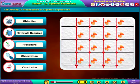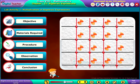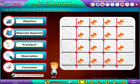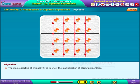Let us do an activity on multiplication of algebraic expressions. Click each tab to know more. The main objective of this activity is to know the multiplication of algebraic identities.